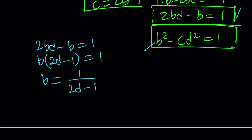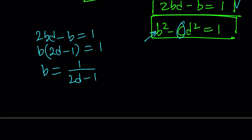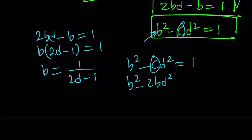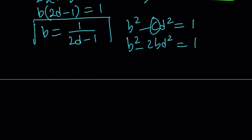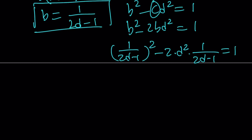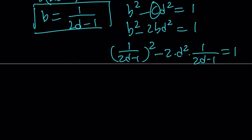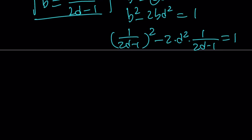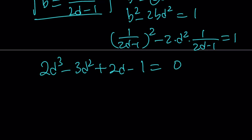We have another equation involving b, c, and d, and c can always be replaced with 2b. Plugging everything in: b squared minus c·d squared equals 1, replacing c with 2b and then b with 1 over (2d minus 1). That's squared, minus 2 times d squared times 1 over (2d minus 1), the whole thing equal to 1. Arranging this equation — making a common denominator, multiplying both sides — gives us a cubic. Please check your work with what I got. Notice that the sum of the coefficients is 0, so d equals 1 is a possible solution.